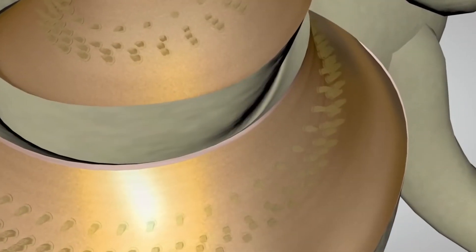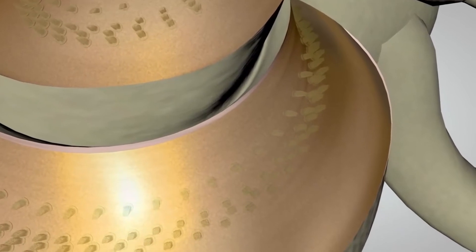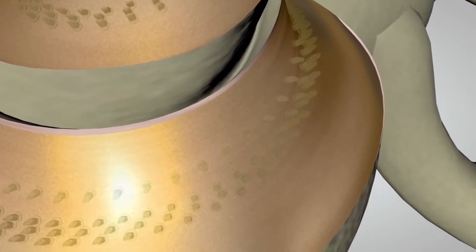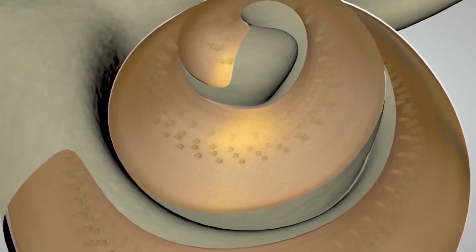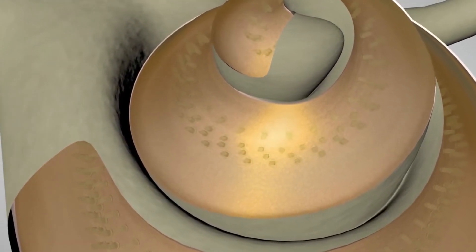The hair cells toward the top of the spiral detect progressively lower pitched sounds, such as a trumpet or trombone. At the very top or apex of the spiral, the hair cells detect the lowest pitched sounds, such as a tuba.